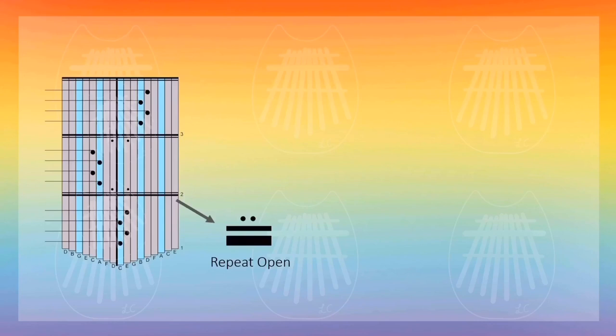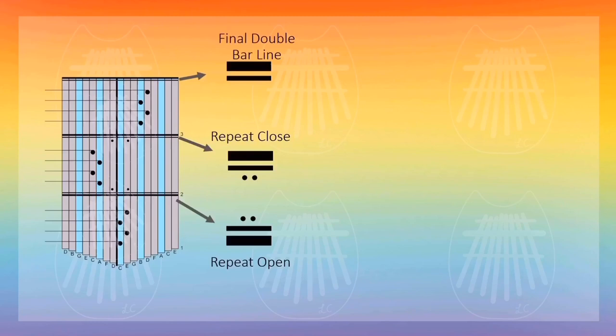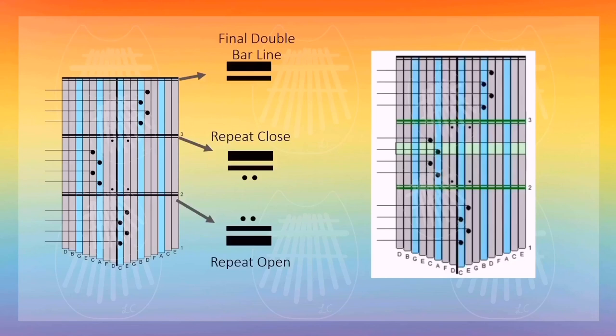This sign here is called a repeat open sign. When you see a repeat open sign, that means you would play the notes in that bar again after you play it once. This one is a repeat closed sign — that's where you stop the repeat. This one is the final double bar line, which tells you when the song ends. If you only see a repeat closed sign but not the repeat open sign, that means you would start from the beginning until you reach the repeat closed sign.